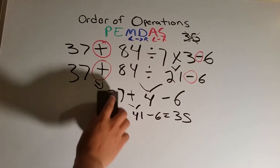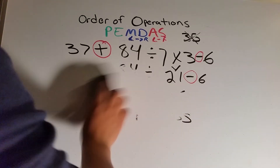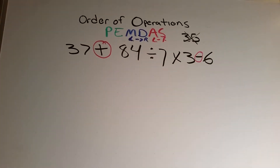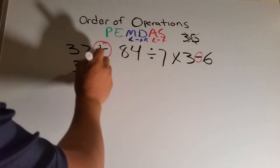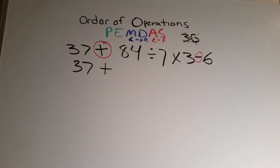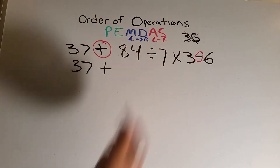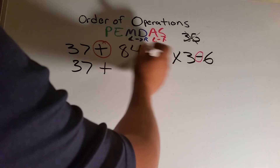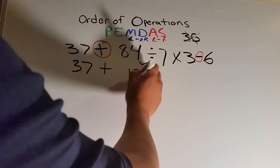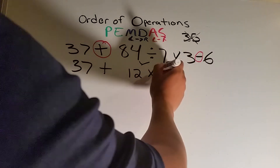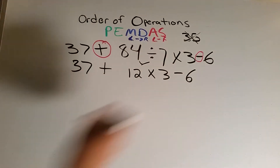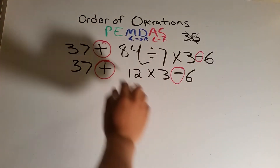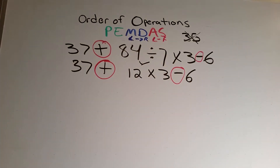Now we're going to go back and do this the right way to show you where it makes a difference. We bring down 37 plus. Technically, we do whatever comes first from left to right. So 84 divided by 7 is going to give us 12 — because multiplication and division are the same, and we go left to right. Then we bring down times 3 and the subtraction sign, minus 6. We keep circling until all we have left is addition and subtraction.